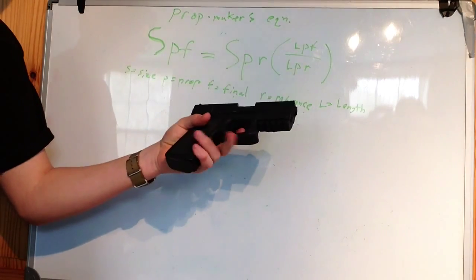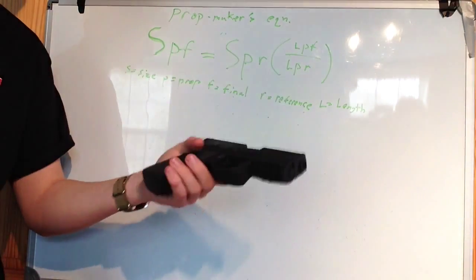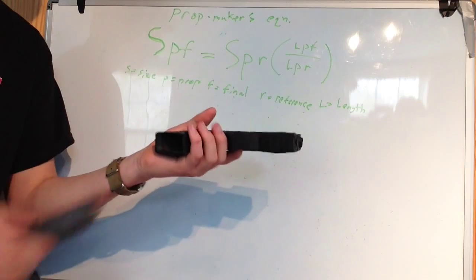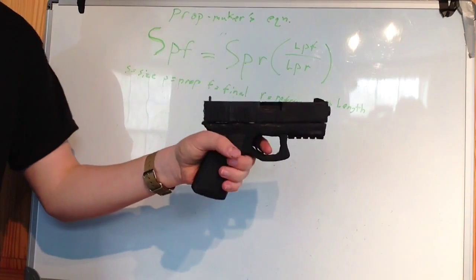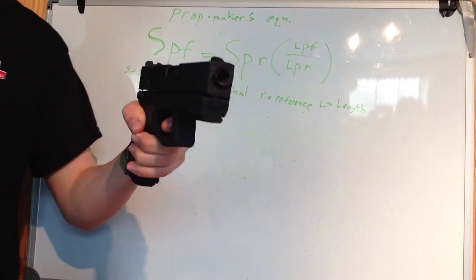Here's a Glock 23. I made this out of cardboard. It has a working slide and a magazine that is removable, and it's about the same size as an actual Glock 23.